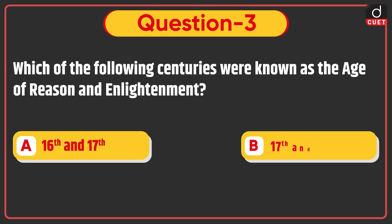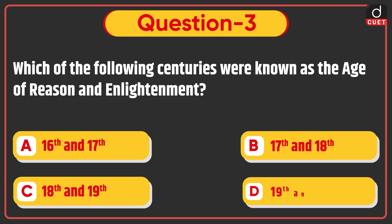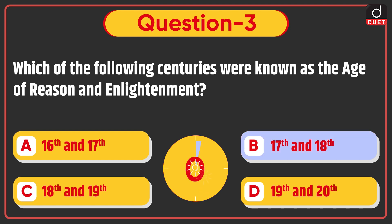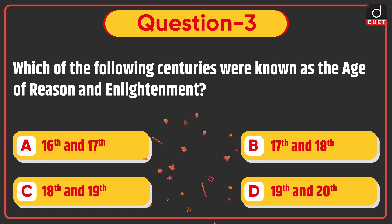Next question: which of the following centuries were known as the age of reason and enlightenment? 16th and 17th, 17th and 18th, 18th and 19th, or 19th and 20th? The correct answer is option B: 17th and 18th.